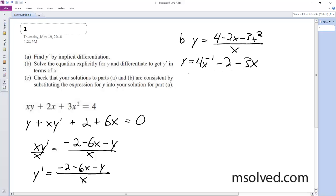And then the derivative of this is y prime is equal to 4x to the negative 2 minus 3. Okay, so solve this.